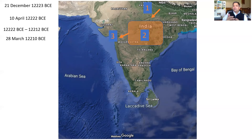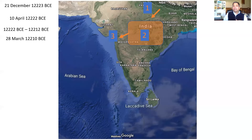This is when certain incidents happened — Shurpanaka came to their ashram, then went away angrily after Lakshman chopped her nose and ears. Shurpanaka went to Kharadushan, and Kharadushan and Trishira attacked Rama. Ram defeated them. The day Kharadushan and Trishira were defeated by Ram and Lakshman was 28th March 12,210 BCE.